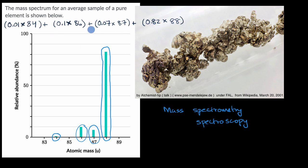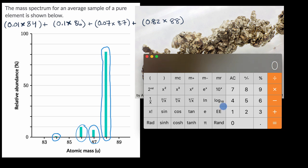That will give us the average atomic mass of this mystery element, which right now I'm thinking is strontium. So 0.01 times 84, plus 0.1 times 86, plus 0.07 times 87, plus 0.82 times 88, is equal to 87.69 as the average atomic mass of this mystery substance.